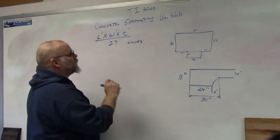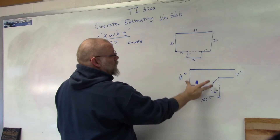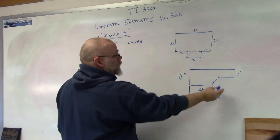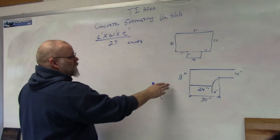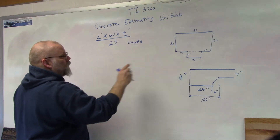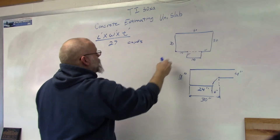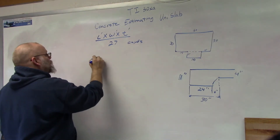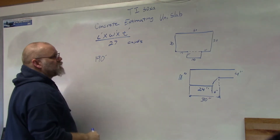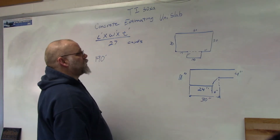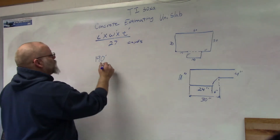First we're going to figure out what it's going to cost for this deeper part — this 11-inch part — and then we'll figure out what we need for the 4-inch part. To do the deeper part, all the way around, we add all our numbers up together and we get 190 linear feet. That looks right.